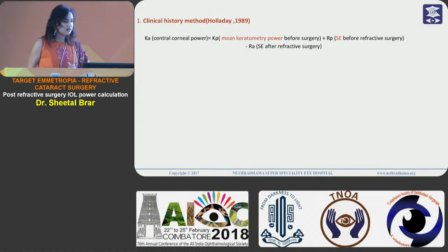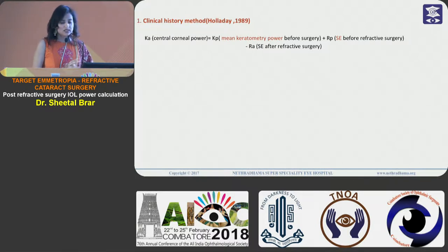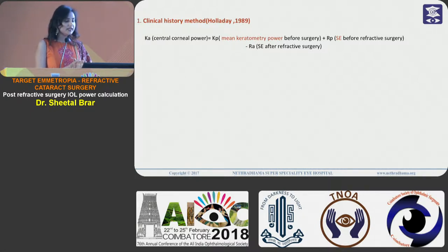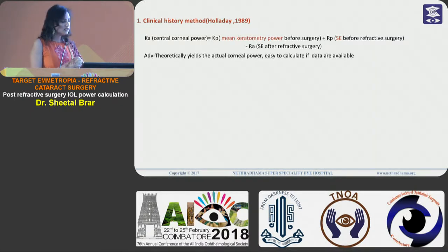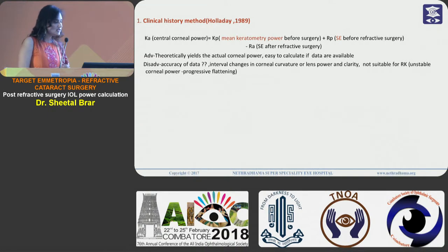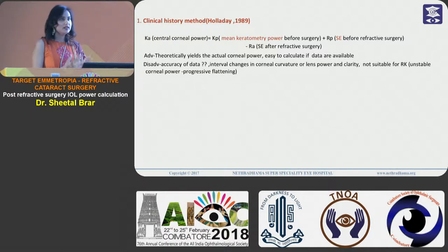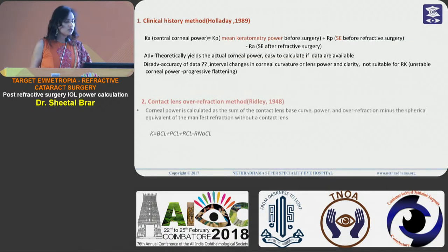The clinical history method, if you have access to the previous refractive data of the patient, is considered the gold standard. The central corneal power is calculated by adding the mean keratometry power before surgery to the spherical equivalent before surgery, then subtracting the spherical equivalent after the refractive surgery. Theoretically it yields the actual corneal power and is easy to calculate provided the data is available. The disadvantage is that the accuracy of data may be questionable, there could be interval changes in corneal curvature and lens clarity between LASIK and cataract surgery, and this formula is not suitable for post-RK eyes due to progressive flattening over time.